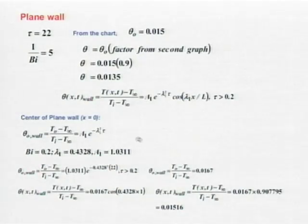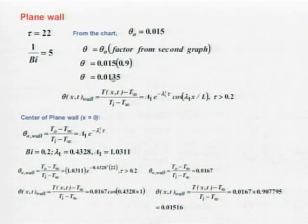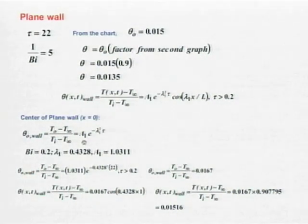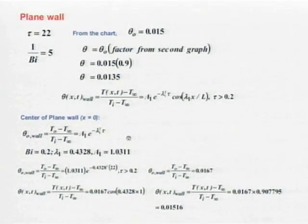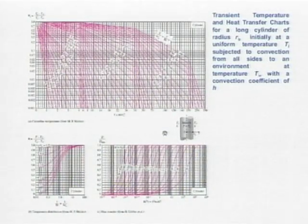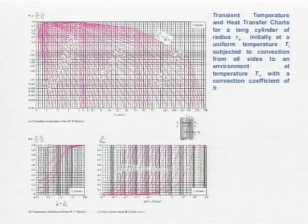Just to show the chart: if you use the chart, you get theta = 0.0135, but without the chart — using the equation — you get theta = 0.01516. There is a significant difference between using the chart and using the equation. That is the reason it is a good idea to go ahead with the equation. We can continue to use the chart for historical reasons, but we can always compare.